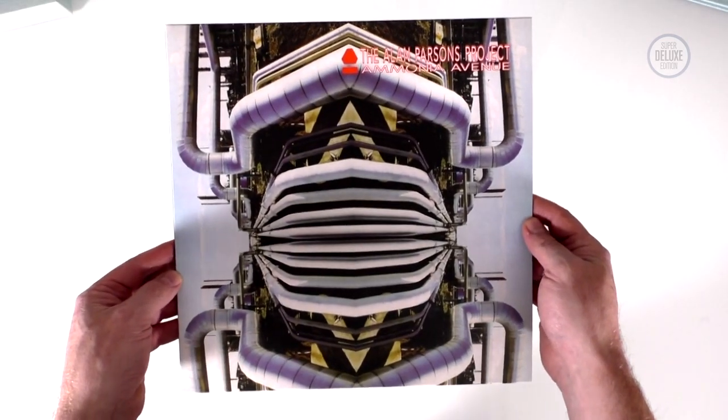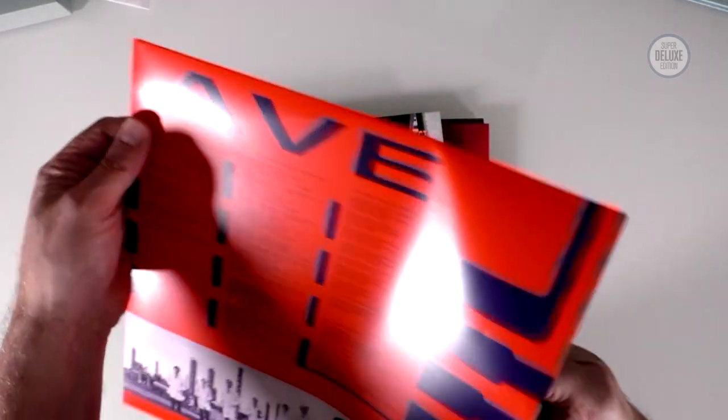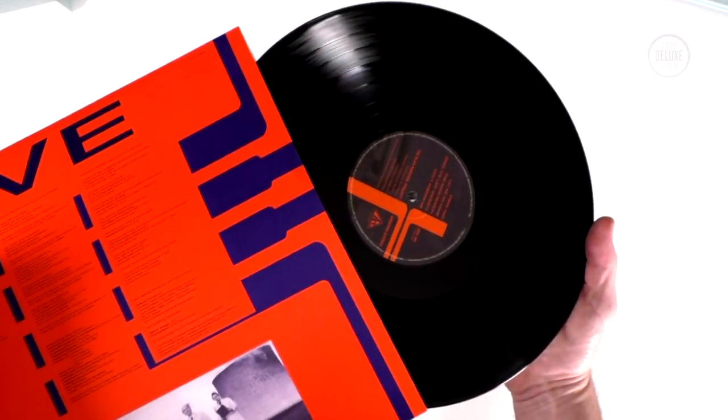Ammonia Avenue from 1984. Again another single sleeve vinyl record. Printed inner. Black vinyl.